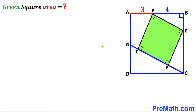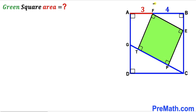Let's get started. Since blue square ABCD is a square, all sides have equal length. We know side AB is 3 plus 4, which equals 7 units. So all four sides are 7 units across the board. Now let's focus on right triangle EFB.